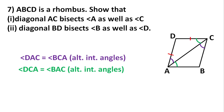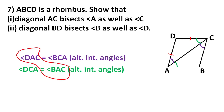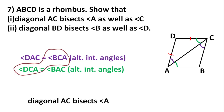Similarly, AD equals CD because they are also adjacent sides of a rhombus, so opposite angles are equal: angle DAC equals angle DCA. All four angles are now equal. Taking the pair — angle DAC equals angle BAC — that means diagonal AC bisects angle A. Taking the other pair — angle BCA equals angle DCA — that means diagonal AC bisects angle C also. So the first part is proved.